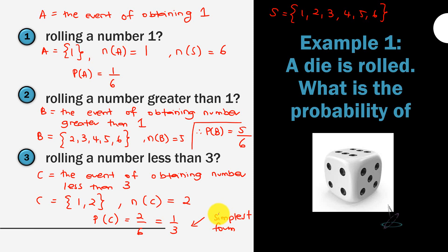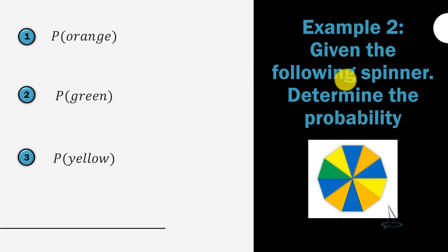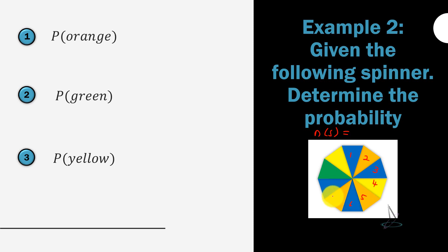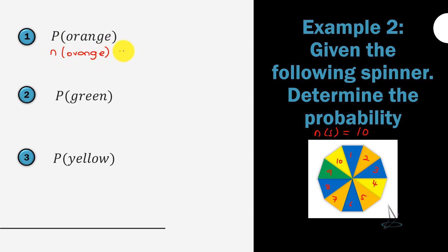The next example: given the following spinner, determine the probability. The sample space has sections 1 through 10, so n(S) = 10. For the probability of landing on orange, we count 3 orange sections, so n(orange) = 3 and P(orange) = 3/10.